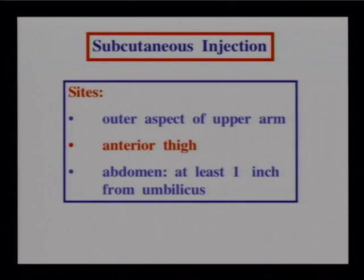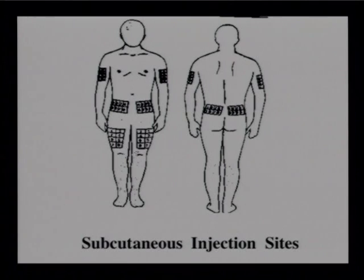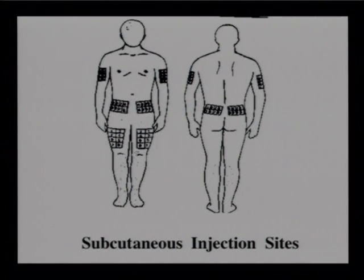Subcutaneous injection sites include the outer aspect of the upper arm, the anterior thigh, and the abdomen — staying one to two inches from the umbilicus. When giving frequent injections such as insulin or heparin, rotate sites. Heparin is usually given in the abdomen. Insulin can be given in the arm, abdomen, or thigh.